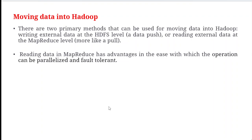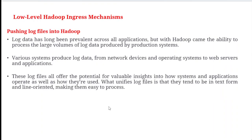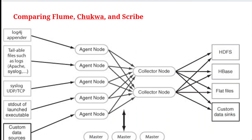Now let's see a few examples of how to push log files into Hadoop, comparing Flume, Chukwa, and Scribe. There are log4j appenders, log files from UDP and TCP, stdout, executable files, and custom data sources. All these are sent to agent nodes, then forwarded to collector nodes, and from the collector nodes to HDFS, HBase, flat files, or custom data sets. The master node is responsible for coordinating with all agent nodes and collector nodes.